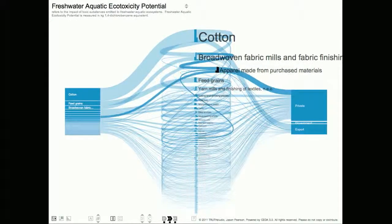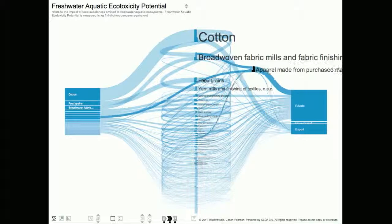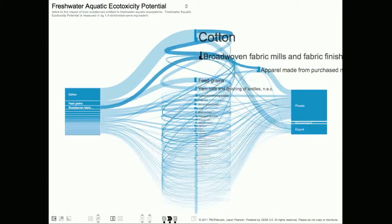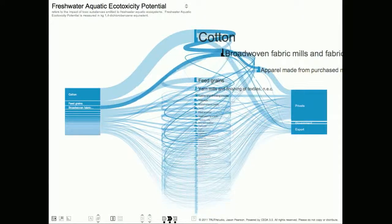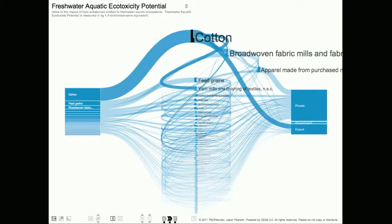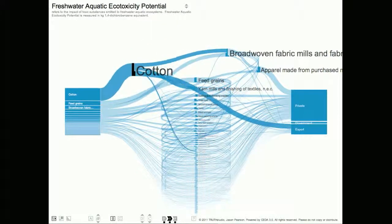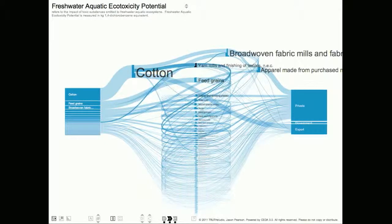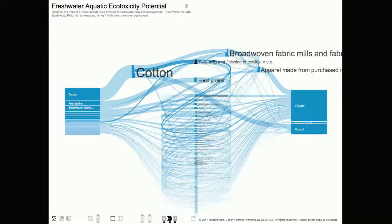To move a sector, I just click on the sector and hold my mouse down while I drag the sector to a new location. And if I hold down the control key while I'm dragging, the sector will snap to one of five preset vertical locations. So I will drag the cotton sector over to the left since it is clearly high up in the supply chain. And I'll drag broadwoven fabric mills up to the top of the screen. And I'll just keep moving sectors to slowly untangle the supply chains.